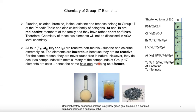Halogens are called halogens because the name means 'salt former' — these elements very easily form salts. Here we can see pictures of three halogens: chlorine, bromine, and iodine.